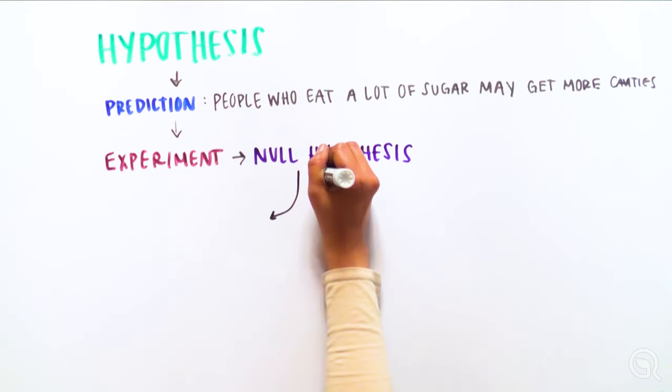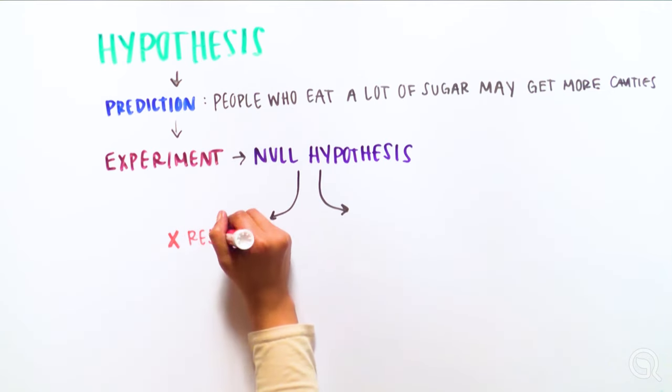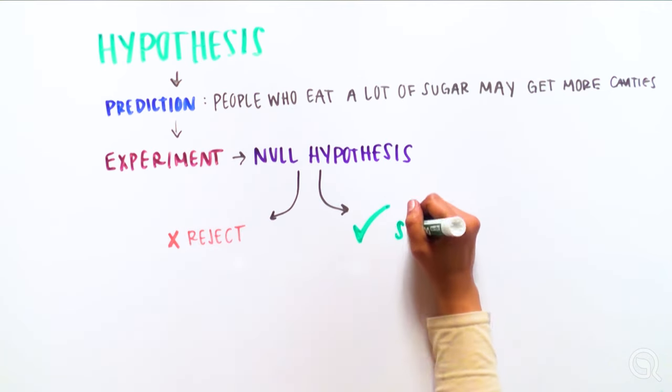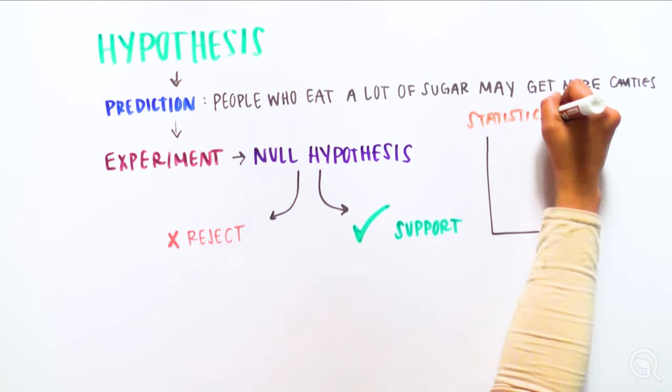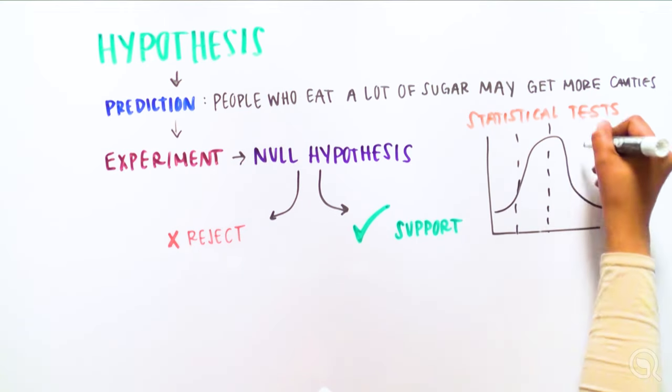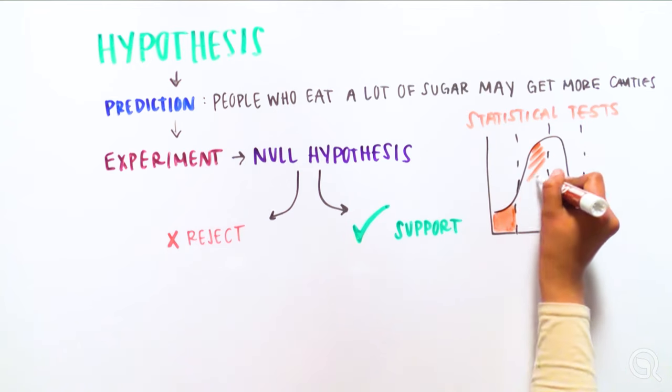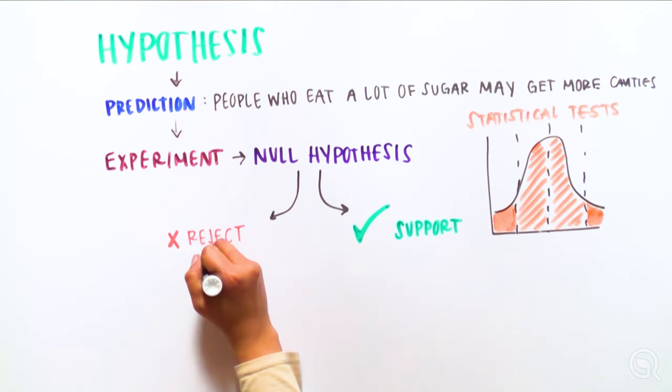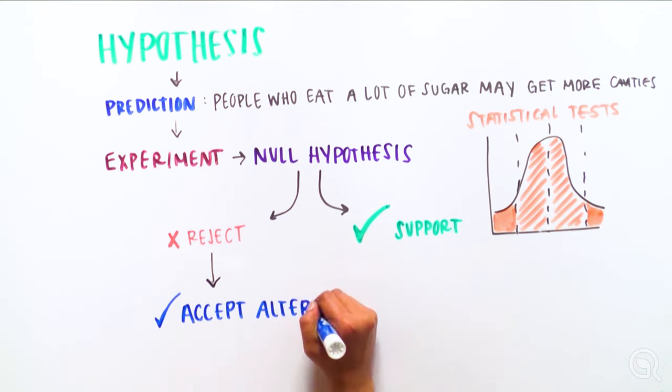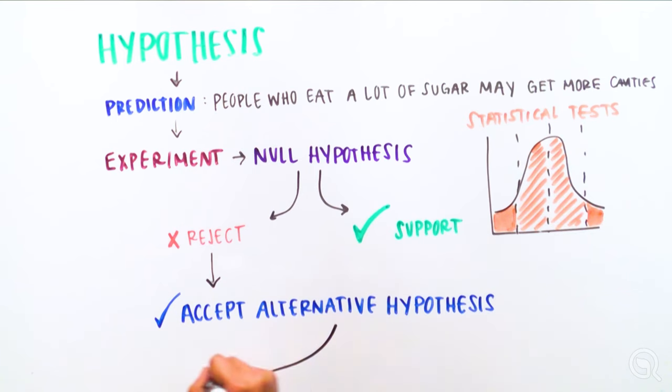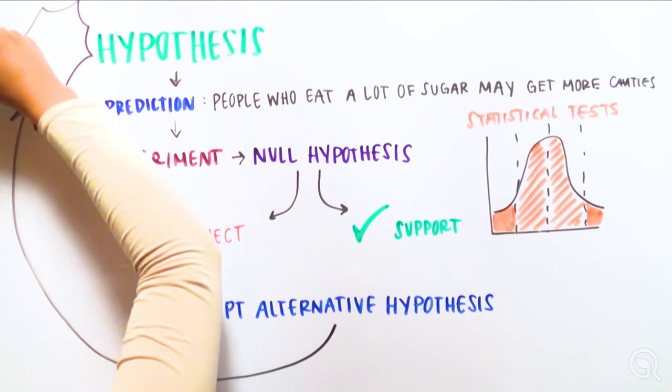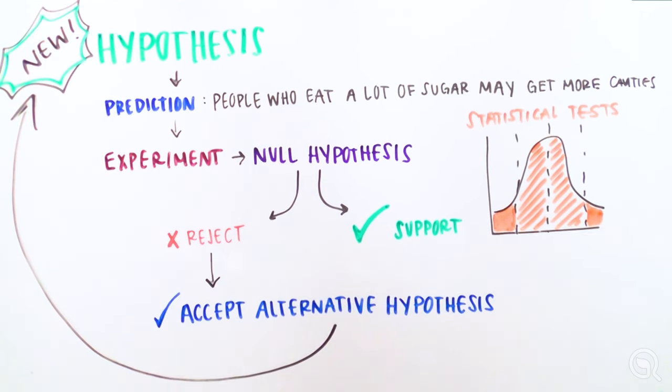Scientific experiments are designed to either reject or support the null hypothesis, based on the data collected. A statistical test allows us to weigh evidence for and against the null and alternative hypotheses. Rejecting the null hypothesis allows us to accept the alternative hypothesis as the best current explanation of the experimental observations.